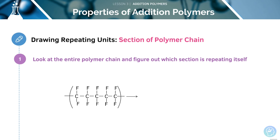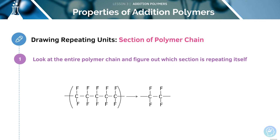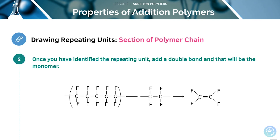Now, let's look at the method for drawing repeating units from a section of polymer chain. First, look at the entire polymer chain and figure out which section is repeating itself — this will be classed as the repeating unit. Once you've identified the repeating unit, add a double bond which will be the monomer.